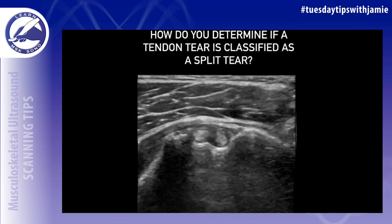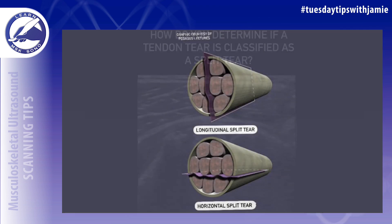How do you determine if a tendon tear is classified as a split tear? A split tear runs along the long axis of the tendon, parallel to the direction of the tendon fibers. It is called a split tear because it is a separation in the tendon.